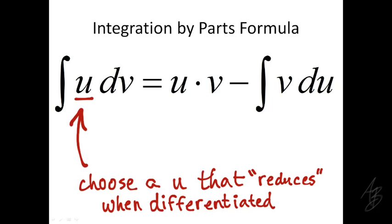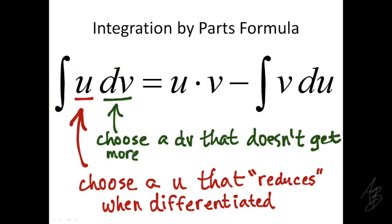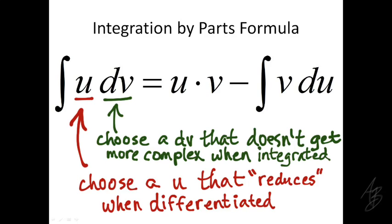Since we're going from dv to v, we want to choose a dv that when we integrate it does not get more complex. Typically we look at a trig function like sine or cosine, or an exponential like e to the x, because those stay the same complexity. The integral of e to the x is e to the x; the integral of sine is negative cosine. We choose dv so the resulting integral is more easily solved.